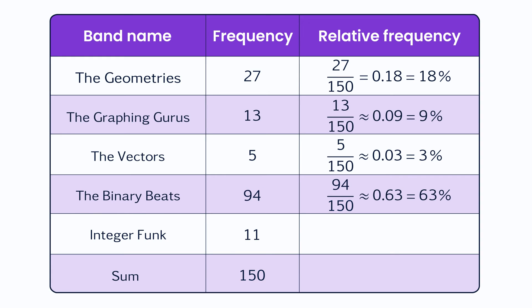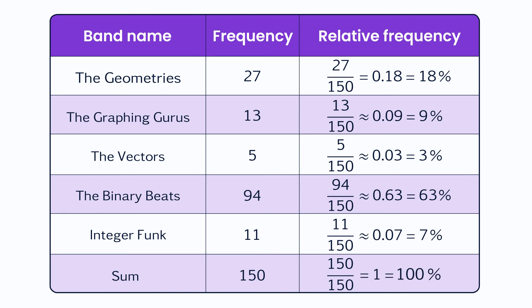Finally, 11 chose Integer Funk, so you divide 11 by 150, which approximately equals 0.07 or 7%. The next step is to check if your relative frequencies add up to 1 or 100%. This time, they did, as they should. But they don't always — this last step is important because you often round your answers. So, if you notice that it doesn't add up to exactly 1, take a closer look at how you rounded the answers and make adjustments where necessary.